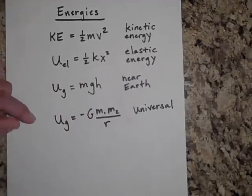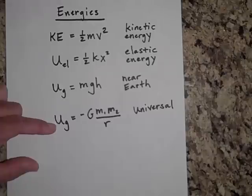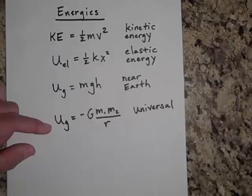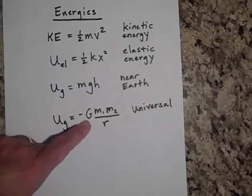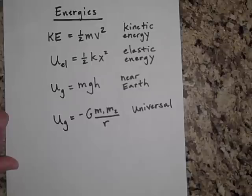And then finally, we will deal with a universal gravitational potential energy. And so any two objects that are a certain distance apart will have a certain amount of gravitational potential energy between them.